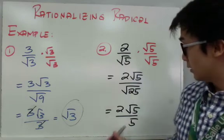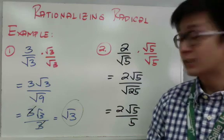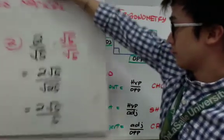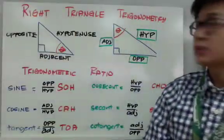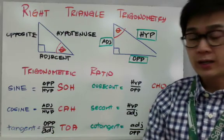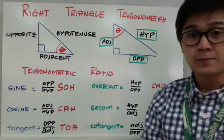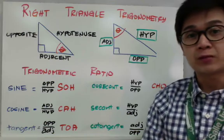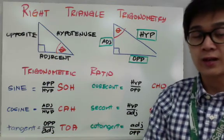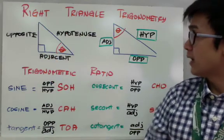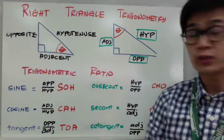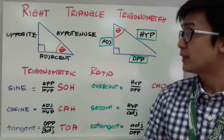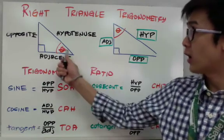The denominator doesn't have the radical symbol anymore, so we're able to rationalize the fraction. Now in right triangle trigonometry, I will introduce a new set of formulas for solving or analyzing the sides of a right triangle. The first thing you need to understand is the parts of the right triangle. We have the reference angle in one corner, and it's important that you can identify it, because the opposite side and adjacent side depend on where the reference angle is.